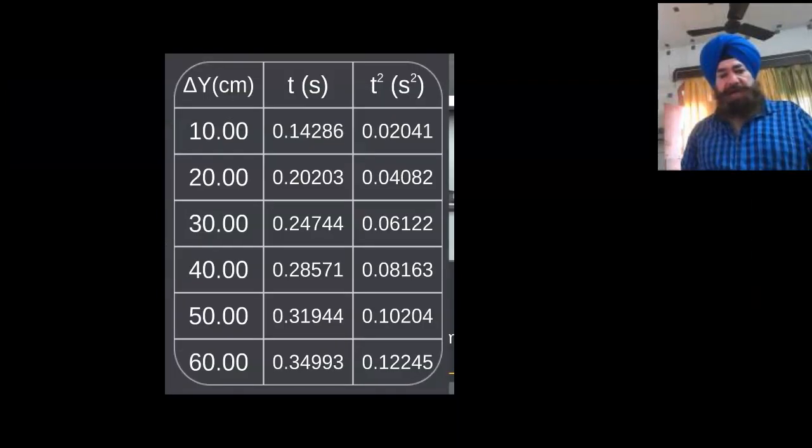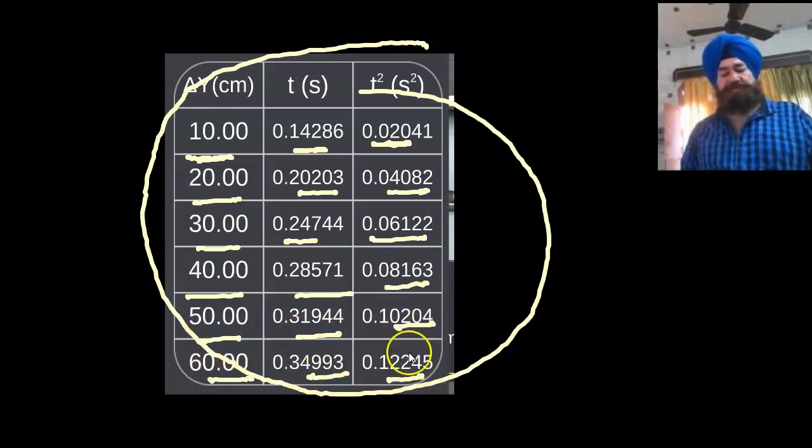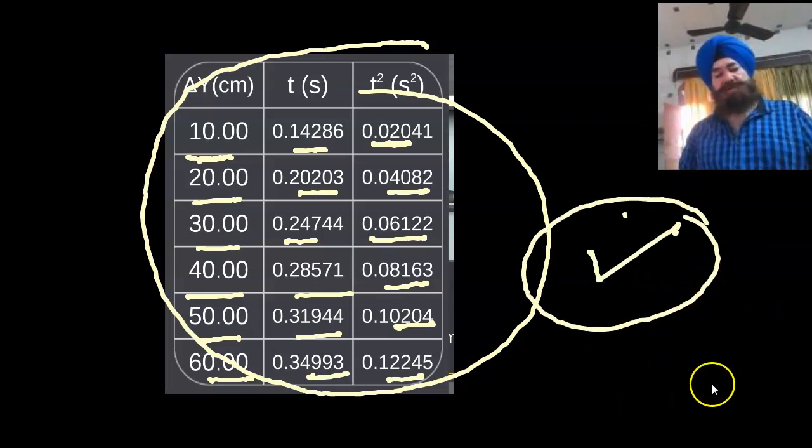So this is our data: distance, time, and t squared. Please note it down. Now it is your work to find the value of g for each reading and write me in the comments box what is your result. Thank you.